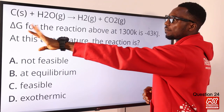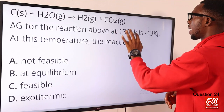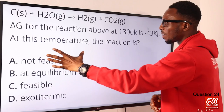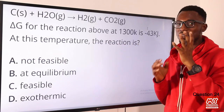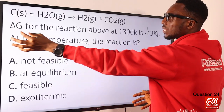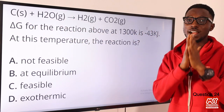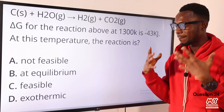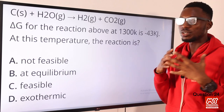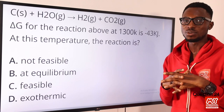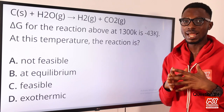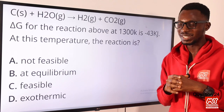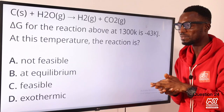Question 24: the standard free energy change for the reaction at 1300 K is −43. When the standard free energy change has a negative value, it tells you that the reaction is feasible. For more ideas on this topic, check the MySchool website — search for CHEM 2009. So the correct option is option C: feasible.